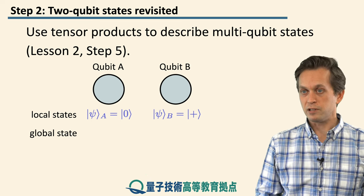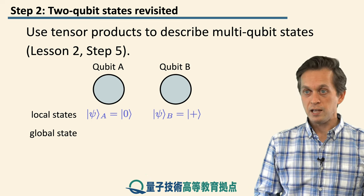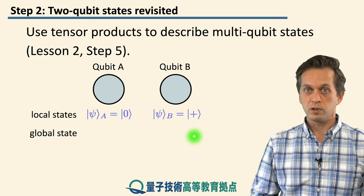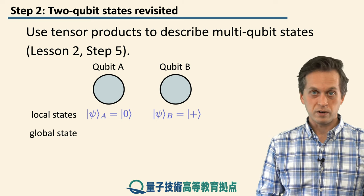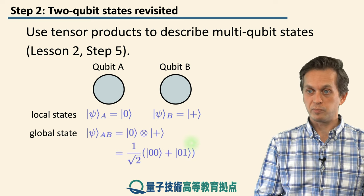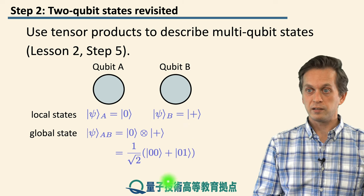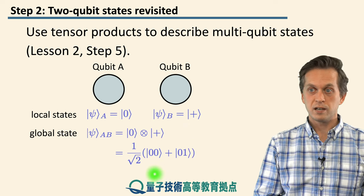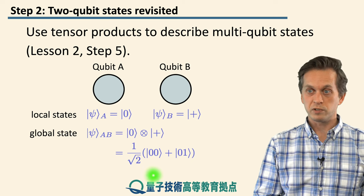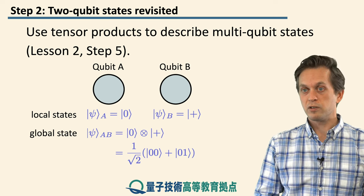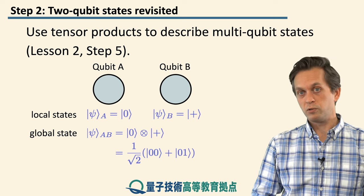We can also consider a different state where A is still in |0⟩, but B is now in a superposition of |0⟩ and |1⟩, which we are calling the plus state. Then again, the global state is very simple: you just form the tensor product of |0⟩ and |+⟩, and when you expand the plus you can write it in the computational basis — it's an equal superposition of |0,0⟩ and |0,1⟩.